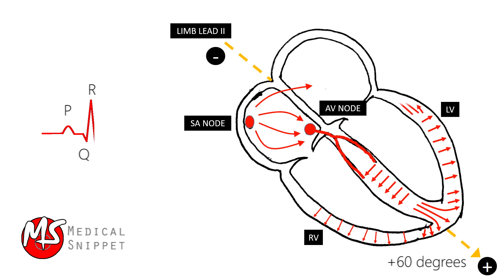Finally, the last region to depolarize is the posterobasal area of the left ventricle. The resultant vector produces a slight negative deflection called the S-wave of the QRS complex.